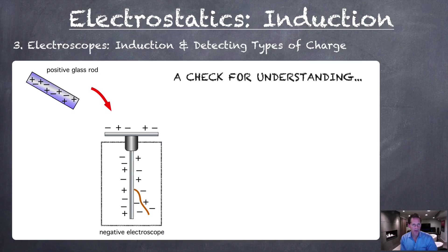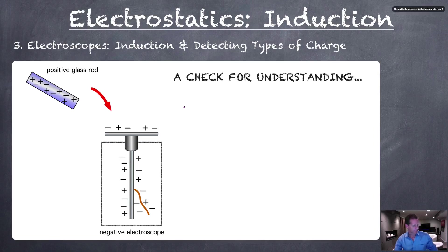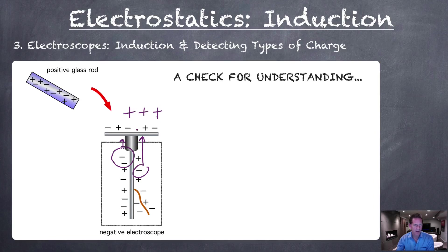Here's a check for understanding. If we have a negatively charged electroscope and we bring a positive glass rod to it, what would happen? The positively charged rod would attract the negatives in the electroscope up toward the top. That means fewer negatives would be left down at the bottom, which means the leaf of the electroscope would fall down. Hope you got it right.